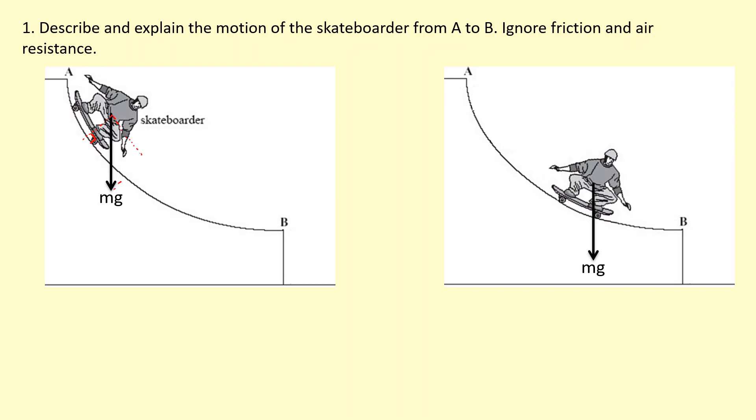This is the component that's perpendicular to the slope—not too interested in this one, that's going to be balanced by the normal reaction force. But this is the component that I'm interested in: this is mg sine theta.